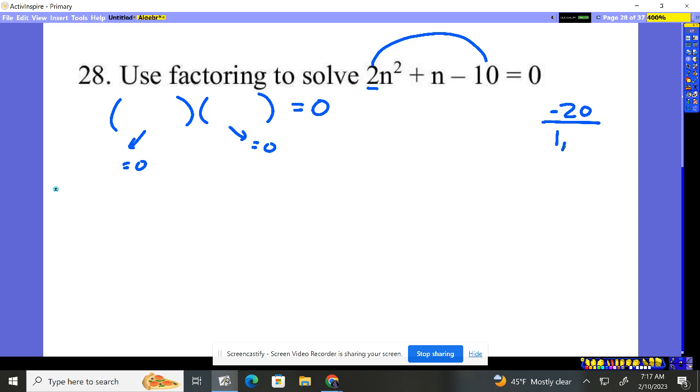So I look at the factors of 20: 1 and 20, 2 and 10, 4 and 5. Now one of them is negative, so I need a difference. Instead of adding them together, we're going to subtract them, and we need to end up with just +1n. That means it's going to be this guy.